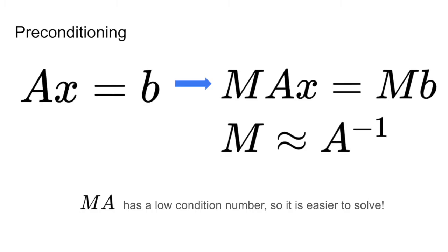Since MA has a low condition number, it is significantly easier to solve and will converge faster with gradient descent.